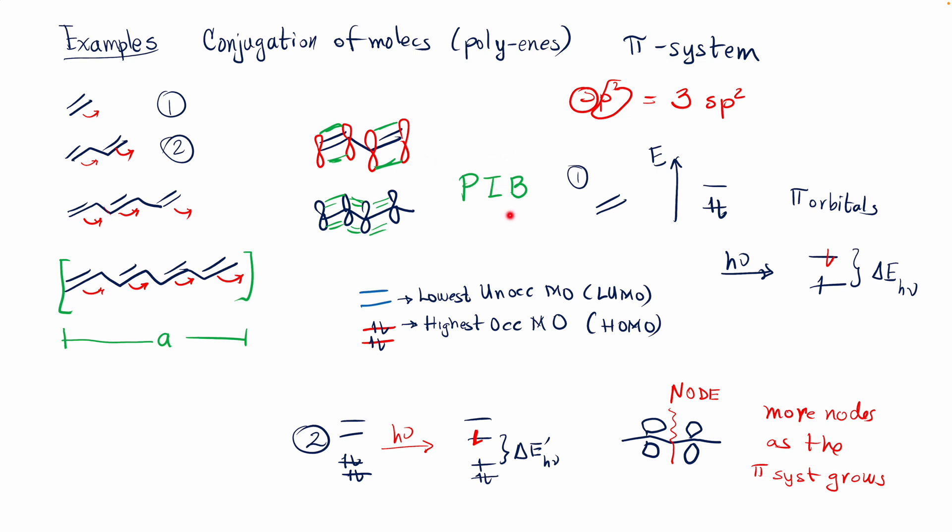In this video we're going to look at how we can apply the particle-in-a-box model to some examples in organic chemistry — specifically the conjugation found in molecules, alkenes, and pi systems.